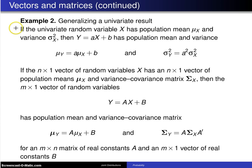So here is the univariate result, and it goes as follows. If the univariate random variable X has population mean μ_X and population variance σ²_X,